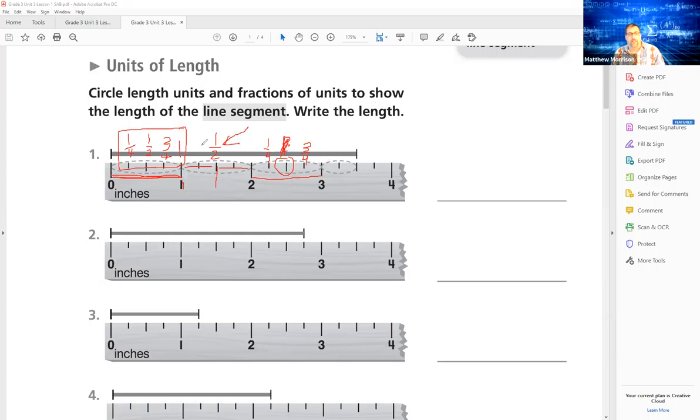So that's how we measure. All right so circle a fraction of units to show the length of this line segment. So it's easy when they print it on our page to be honest with you. So we're going to use these first but there's a couple key things that we'll have to talk about before we have you measure on the second page of this document.